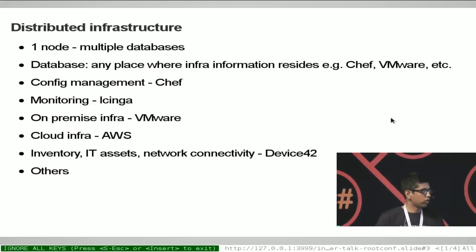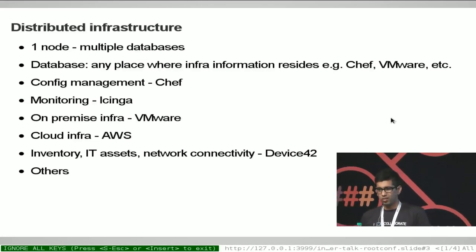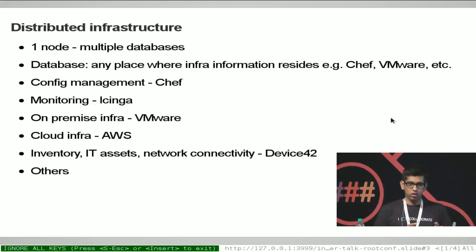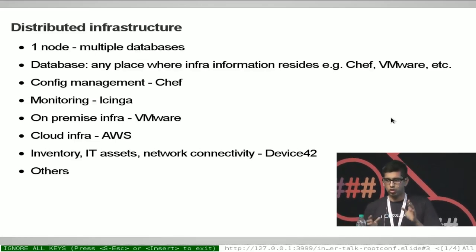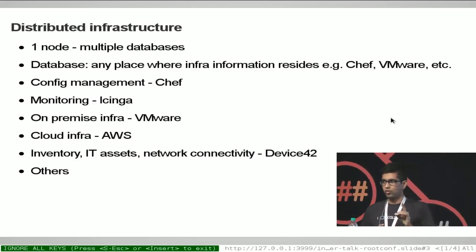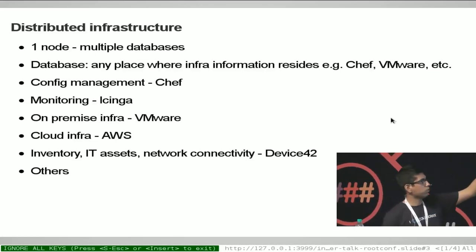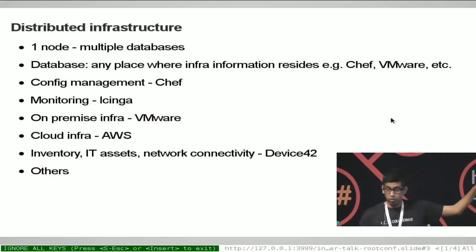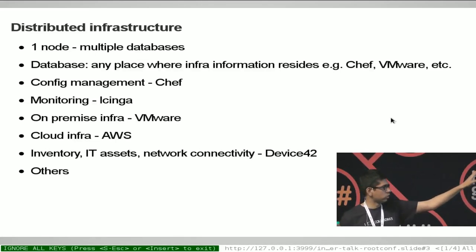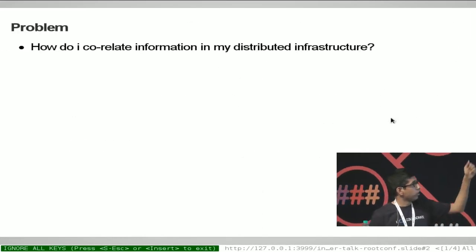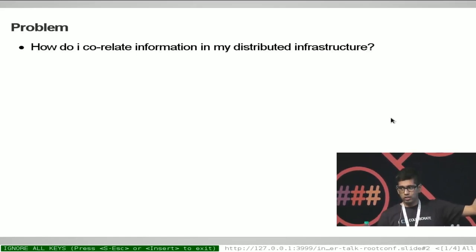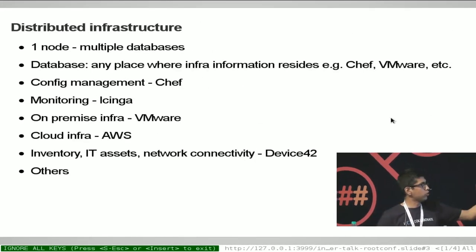For those of you who are not familiar with Device42 — it is basically an inventory management system which provides APIs to tell you where your node is and how it is connected to your network switches. So we are talking about just one node, a web server, and the information about that node is distributed across Chef, Chinga, VMware, AWS, Device42, and it can go beyond this. So if we revisit the problem statement: how do I correlate information in my distributed infra? This is my distributed infra.